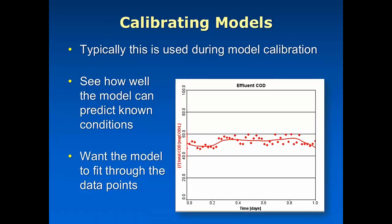For dynamic simulations, the most straightforward way to calibrate them is to plot some effluent quality — for example, some mixed liquor numbers. This is an effluent COD example, and you'll plot the data on there. It's going to have some scatter to it from both the variability and dynamics of the plant you're modeling, but also measurement error and other uncertainties, and we want to make sure that the model tries to fit those data points as much as possible.